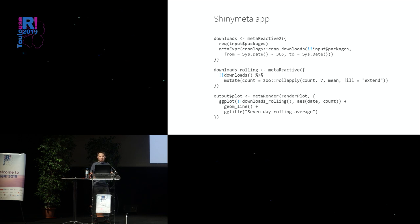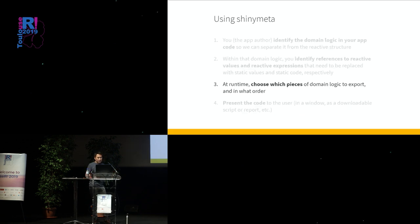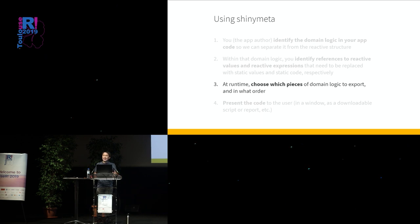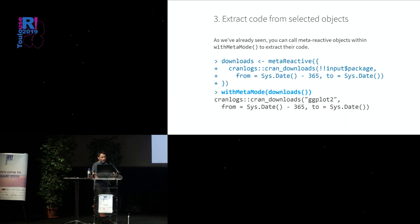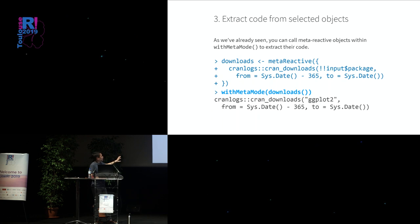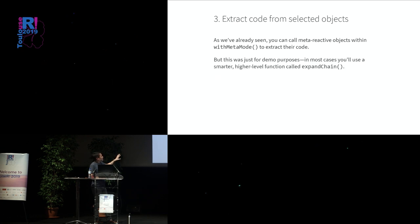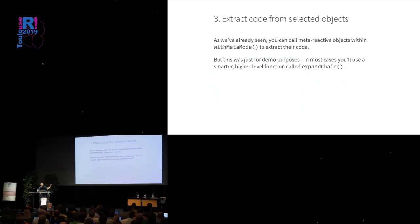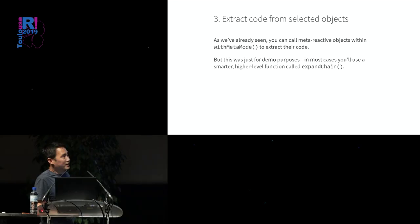So this is what our Shiny app looks like so far: we've turned the reactives into meta reactives, added the bang-bangs, and now we have a complete set of domain logic ready to be exported. The next step is to actually identify which pieces of domain logic are worthy of being exported to the user at any particular time. When we want to get the code out of a meta reactive, we use `with_meta_mode()` — but as I said, this is really just for demo purposes. In most cases we'll use a function called `expand_chain()`.